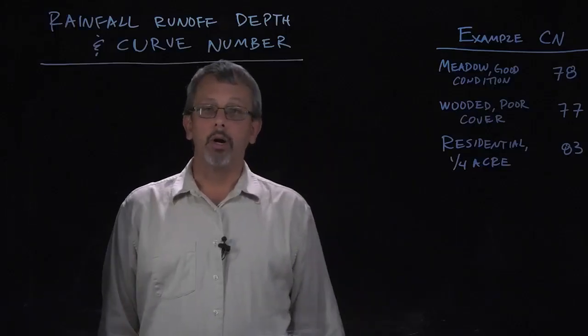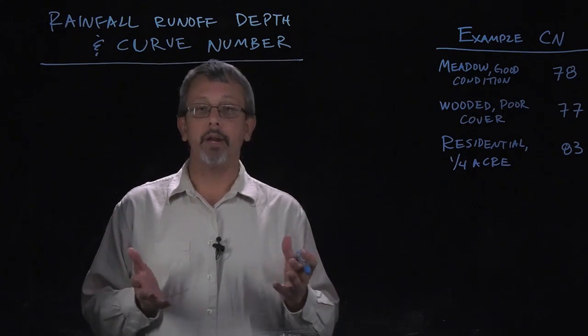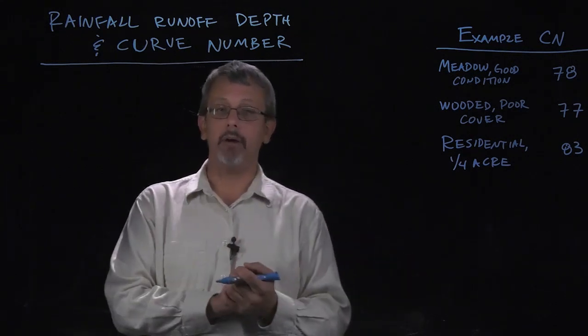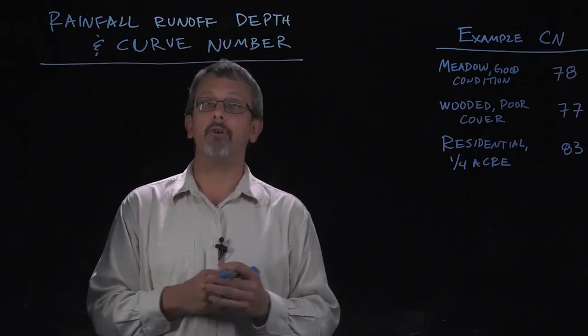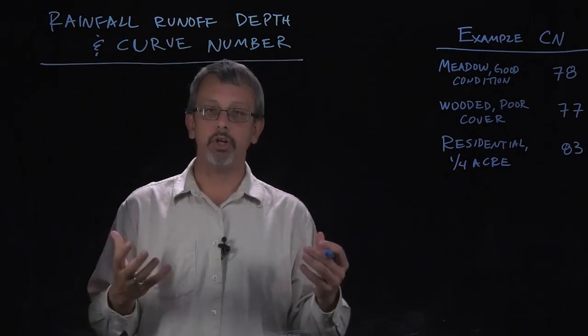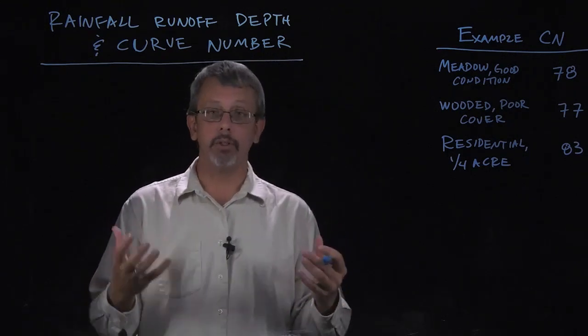Another method for relating the amount of precipitation that falls in an area to the amount of runoff that comes off of that area is to use something created by the Soil Conservation Service called the rainfall runoff depth relationship. This relies on a particular value called a curve number.